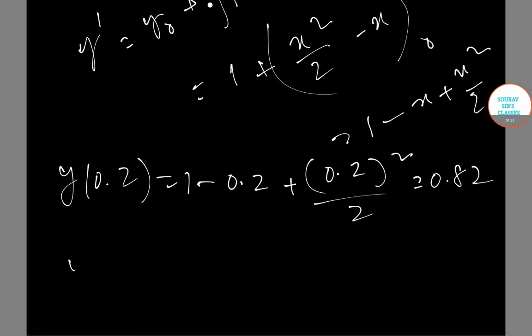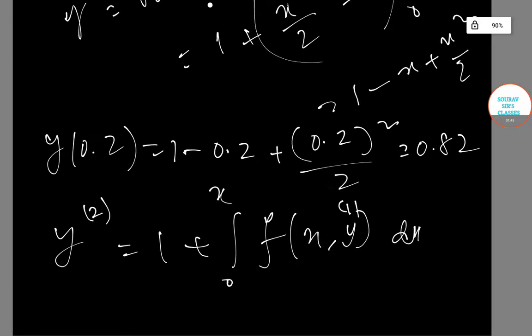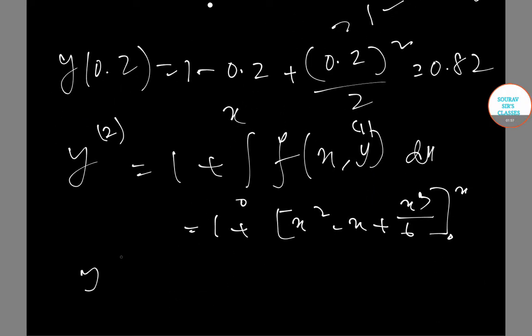Now y₂ = 1 + ∫f(x,y₁)dx with limit 0 to x. This gives us 1 + x²/2 - x + x³/6 from 0 to x. This gives us the value y(0.2) = 0.83867.